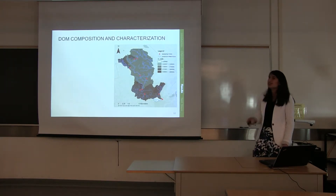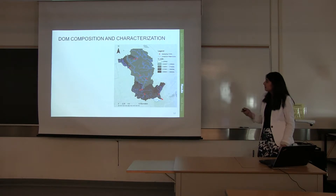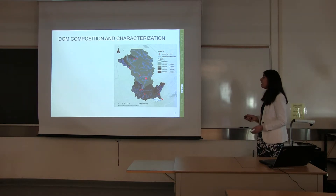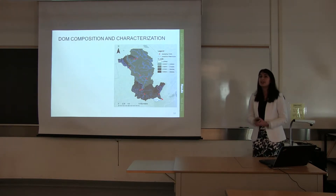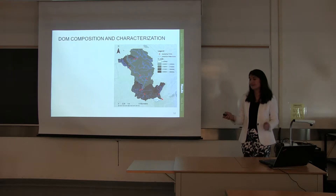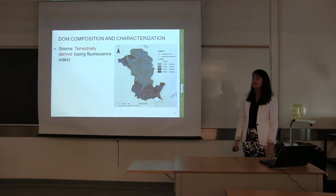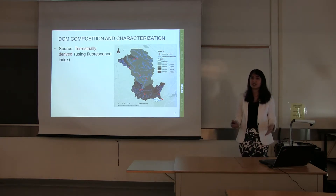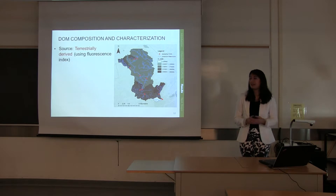Looking at the freshness index map to determine the source of DOC — whether terrestrially derived or microbially derived — the fluorescence index values found were between 1.34 and 1.66. In literature, values ranging between 1.3 and 1.7 indicate a terrestrially derived source, meaning all dissolved organic matter is coming from the decomposition of plants, not bacteria.